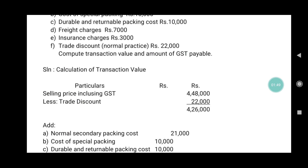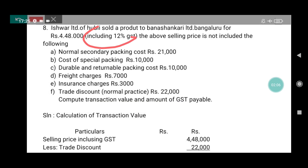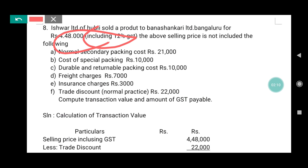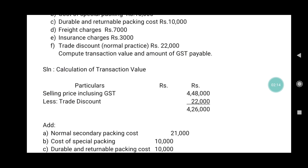First, we take the selling price which includes GST. The selling price including GST is ₹4,48,000. So we take ₹4,48,000 as the starting figure, which includes GST. Now we deduct the trade discount, because the supplier has given a trade discount.